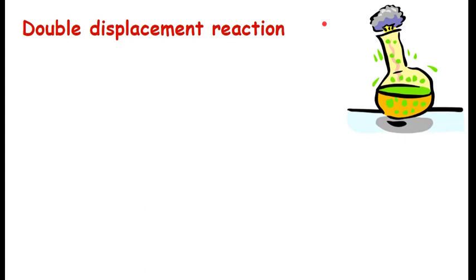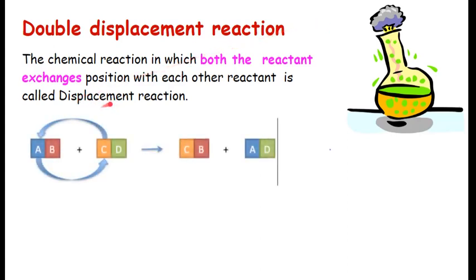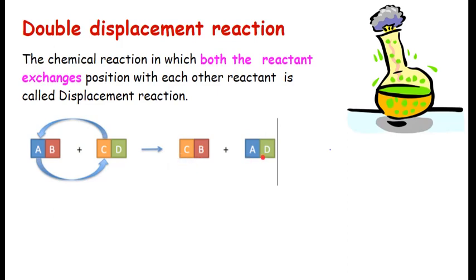Moving ahead to the last one, which is called double displacement. First was displacement, now double displacement. What will happen? What do you think? So, in this case, it is a chemical reaction in which both the reactants exchange position. Earlier only one was exchanging position. Here two will exchange positions. How? There is a misprint over here. It should not be displacement. It should be double displacement. Please make that correction. This is a double displacement reaction. How? A is also there, and C is also there. In the product see what happened? Exchange happened. Earlier B was with A, now B will be with C. Earlier A was with B, now A will be with D. Both have just exchanged their partners. It is just like exchanging the partners.